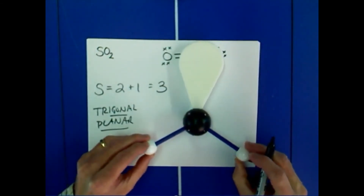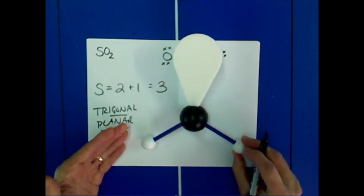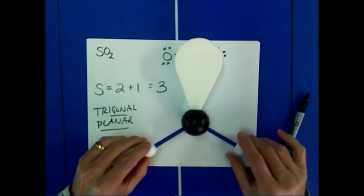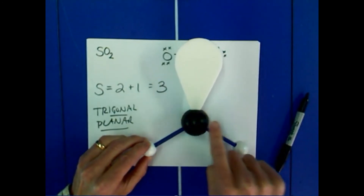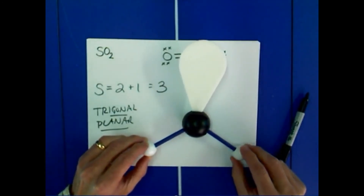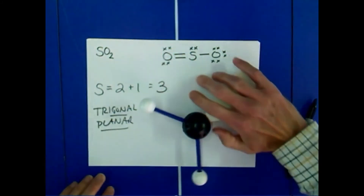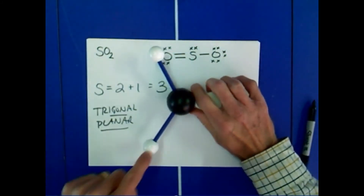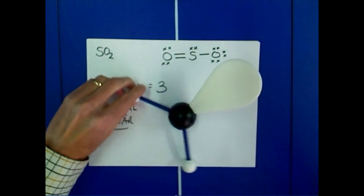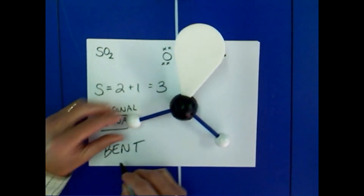However, we do not describe this molecule as being a trigonal planar structure. When describing the molecule, we look at how the atoms in the molecule orient themselves to one another, and we ignore the lone pair. If we just look at this molecule without the lone pair, it looks bent. So this molecule has a bent molecular structure.